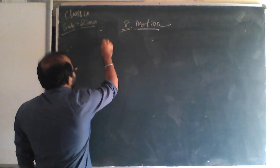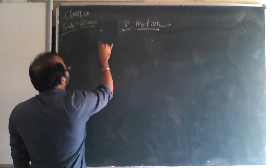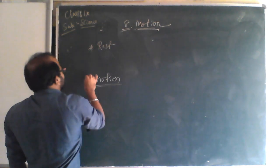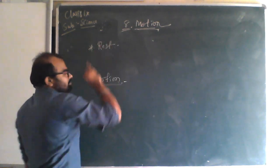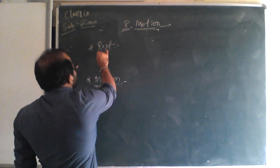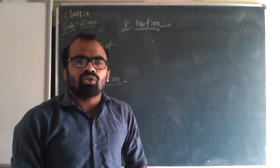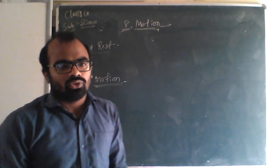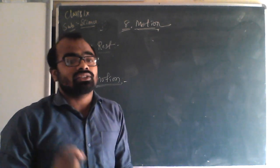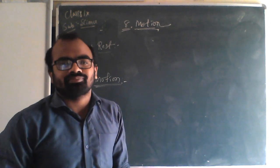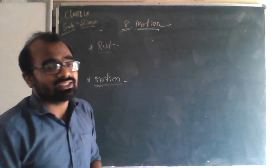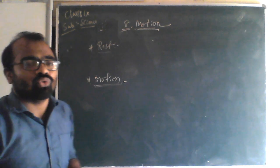So first I will describe rest and motion. These are two important points you should remember. Rest is a natural state of a body — a body always wants to be in rest. For example, in cricket, a ball even when given a hit does not keep moving continuously. After some time it comes to rest. A body's natural tendency is rest, so a body always wants to be in rest.